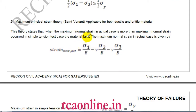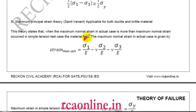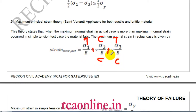If sigma one, sigma two, and sigma three are all tensile, the strain is sigma one/E minus mu(sigma two/E) minus mu(sigma three/E). If sigma one is tensile, sigma two is compressive, and sigma three is tensile, the mu term for sigma two becomes positive (plus). Similarly, if two of them are compressive the sign changes accordingly — this was discussed during Poisson's effect.